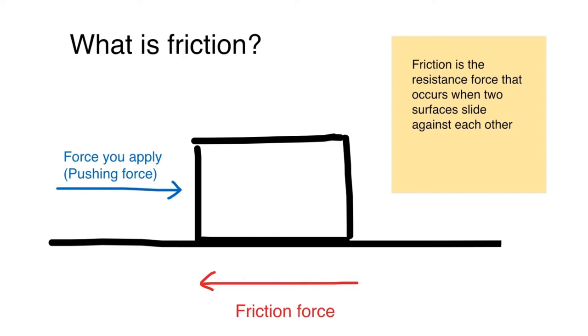Friction is the resistance force that occurs when two surfaces slide against each other. As you can see in the picture, the blue arrow shows the direction you are pushing the object and the red arrow shows the friction force which is in the opposite direction of the blue arrow.